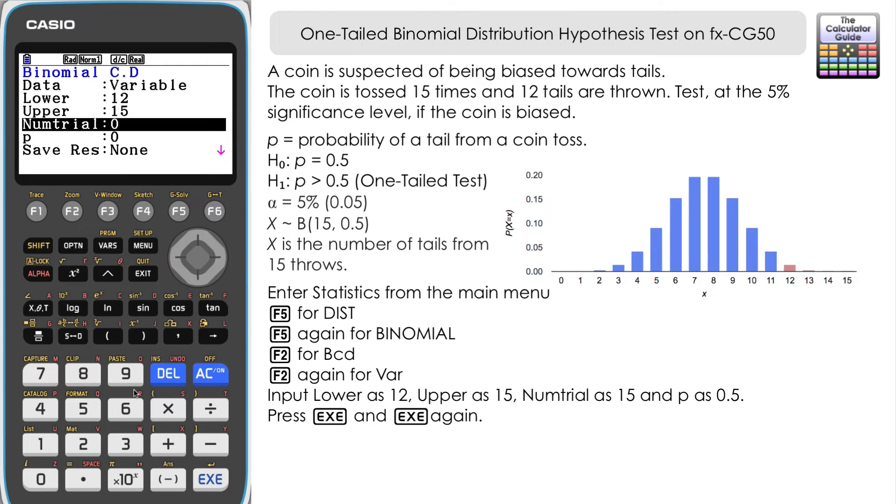The upper will be the maximum number of tails we could have achieved. We threw the coin 15 times, so it's 15. It should match our N value. Our upper is 15. The number of trials is 15, that's our N value. And P is 0.5, coming from our null hypothesis.